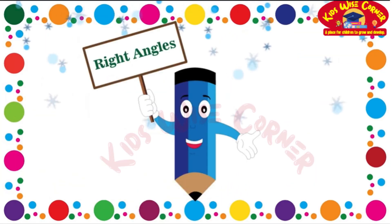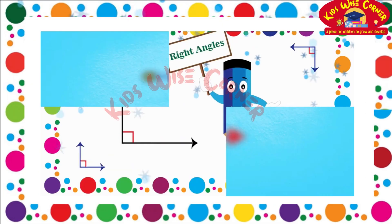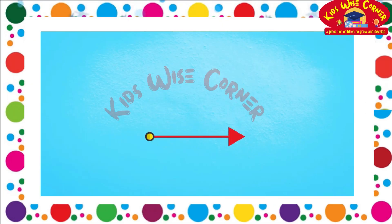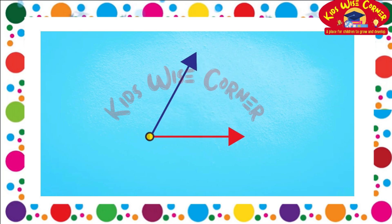In this video, we'll focus on what right angles are and how they are formed with two rays. We'll keep the red ray fixed and rotate our blue ray until it points straight up and the angle measures 90 degrees.